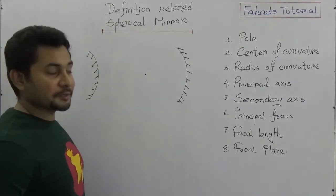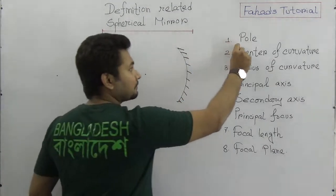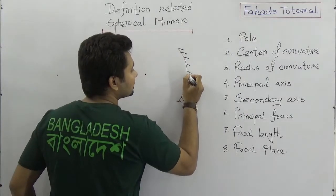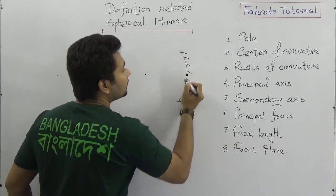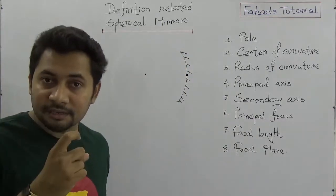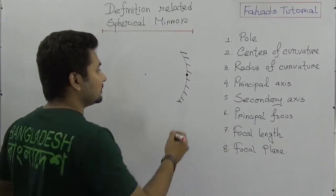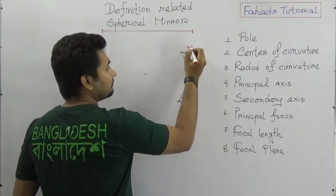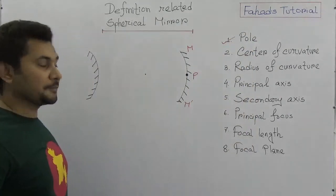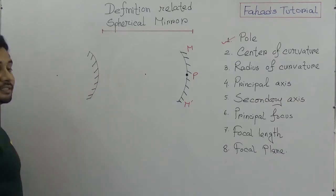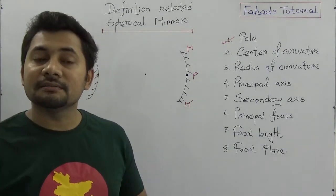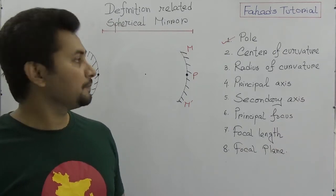Now think about what the pole is. As this point is working as a mirror, the middle point of it will be known as the pole. The midpoint of the reflecting surface of a spherical mirror is known as the pole, and it is denoted by P. So if MPM prime is a spherical mirror, then P is the pole of the spherical mirror.